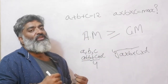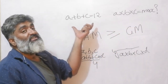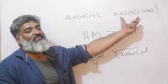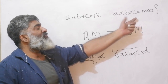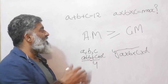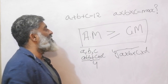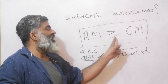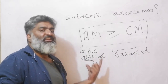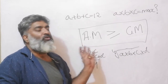We are looking at the maximum and minimum values of expressions where either a sum's value is given and the product's maximum is asked, or the product's value is given and the sum's minimum is asked. All of this is based on the single idea that for any set of terms, the arithmetic mean is greater than or equal to the geometric mean.